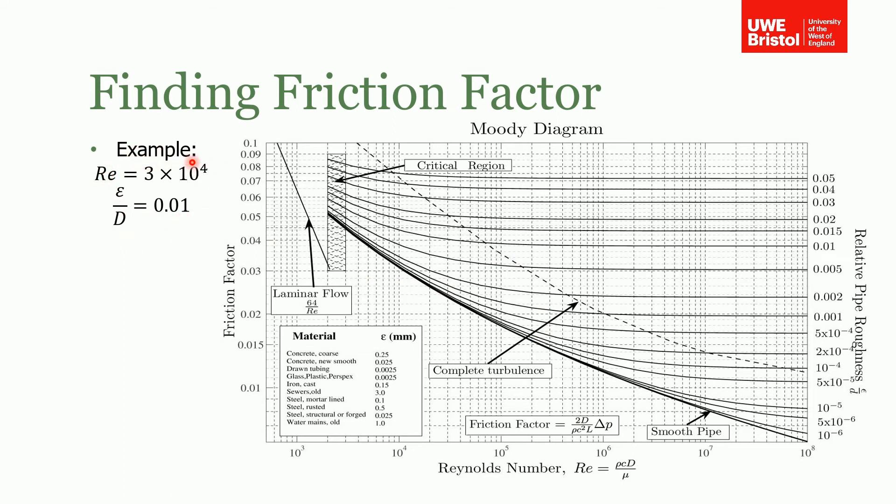Let's say in this example we have a Reynolds number of three times ten to the four and a relative roughness of 0.01. How do we find the friction factor? Well, the first thing is we look up the Reynolds number on here: one times ten to the four, two times ten to the four, three times ten to the four. We also look up our relative pipe roughness, which is this line here. Remember, this is a line of constant pipe roughness. We just need to find the point where these two intersect. We keep following this line until we get to this point here. That is the point, the middle of those crosshairs, where those two lines intersect. We then read off on the left-hand scale the friction factor, which in this instance is 0.04.